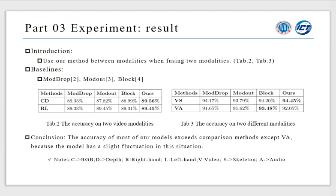The CD in the table means that we use the fusion method on the RGB and DIPs modalities fusion stage, and the others are similar. From the results of these tables, we can know the accuracy of different fusions when fusing two modalities. Our method outperforms the baselines except the VA which has a slight fluctuation.